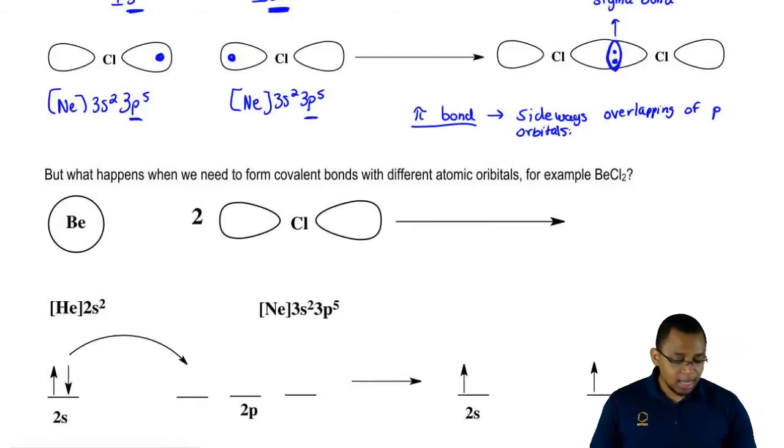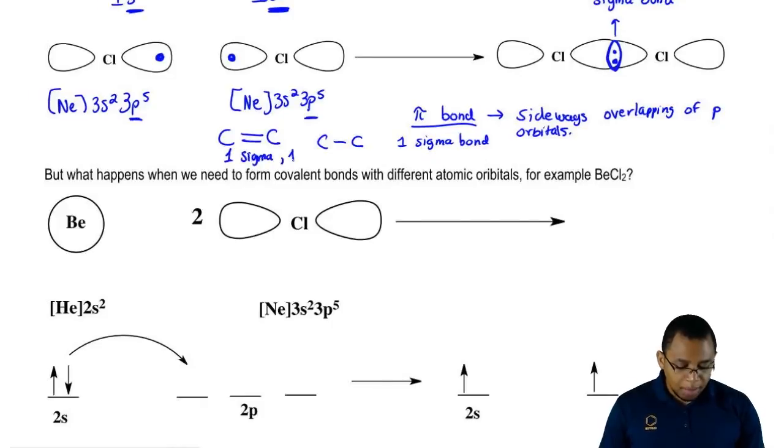If you have elements single bonded to each other, you have one sigma. Every bond you make is always a sigma bond. Let's say our compound has two bonds together, it's a double bond. Well, it's going to have one sigma and one pi.